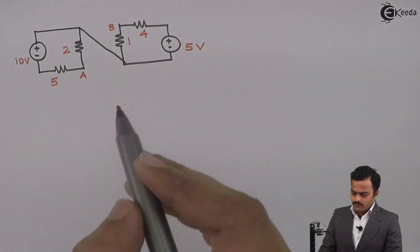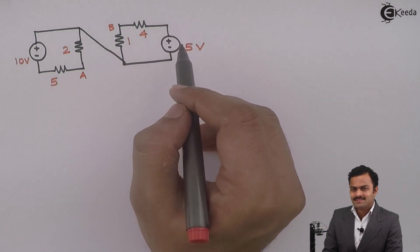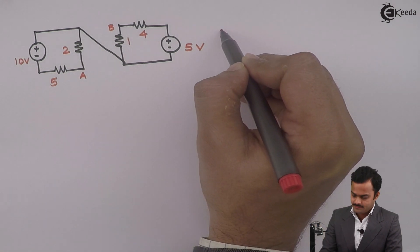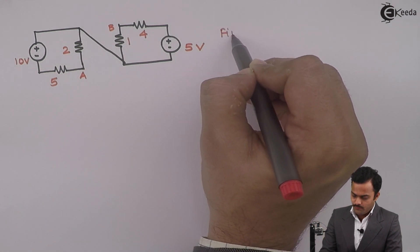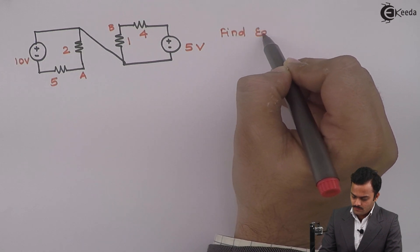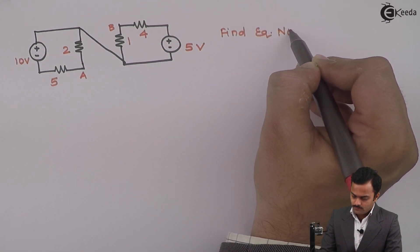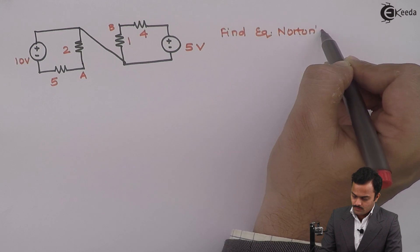We need to replace it as a Norton's equivalent circuit. So the heading is: find equivalent Norton's circuit between terminals A and B.